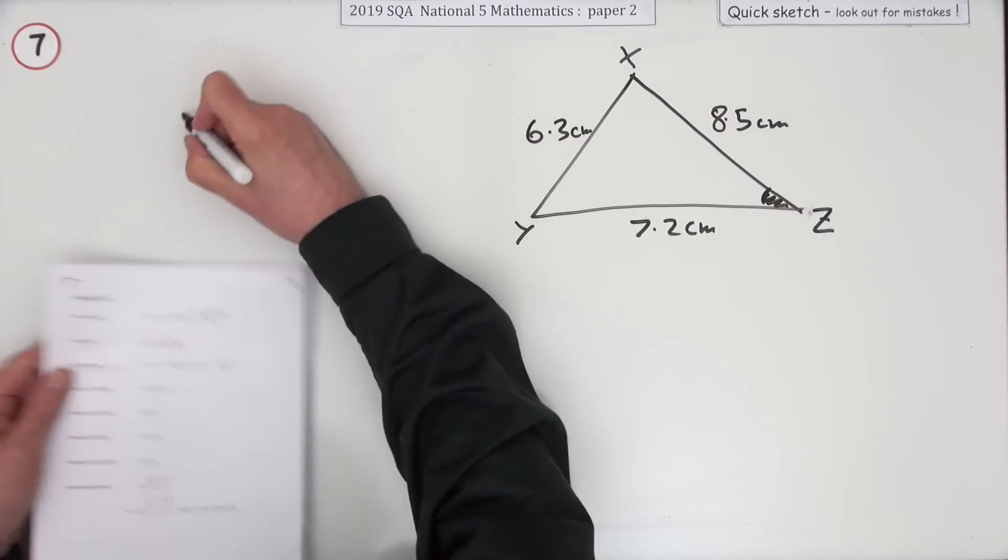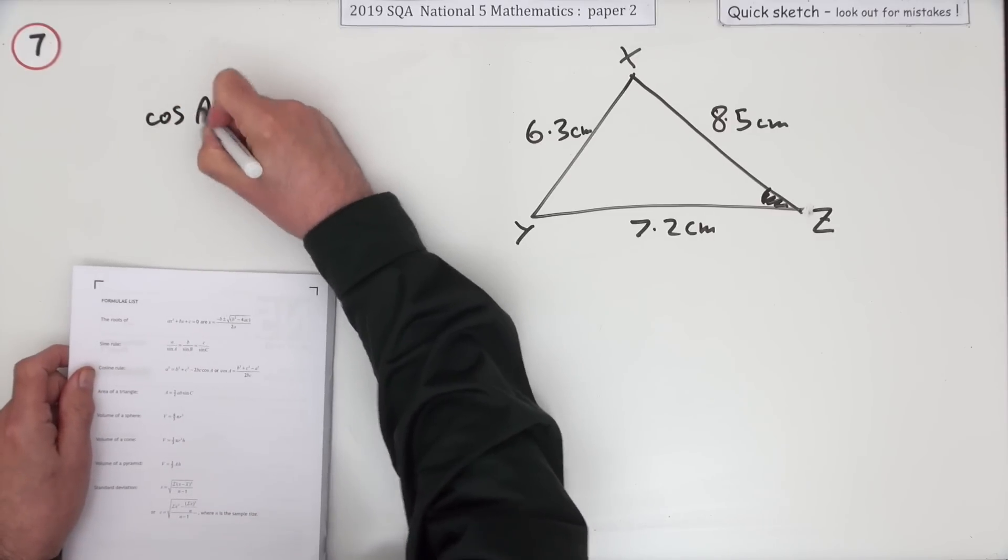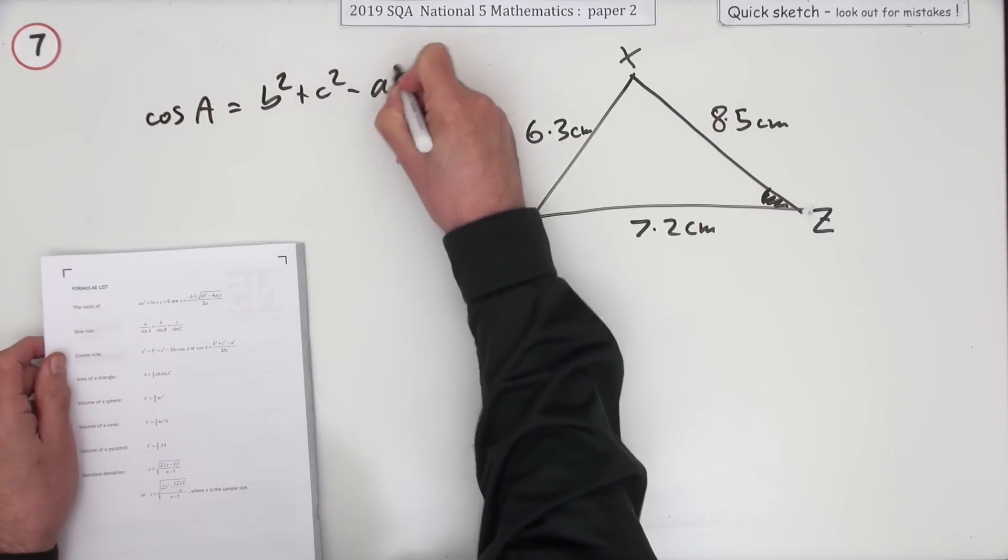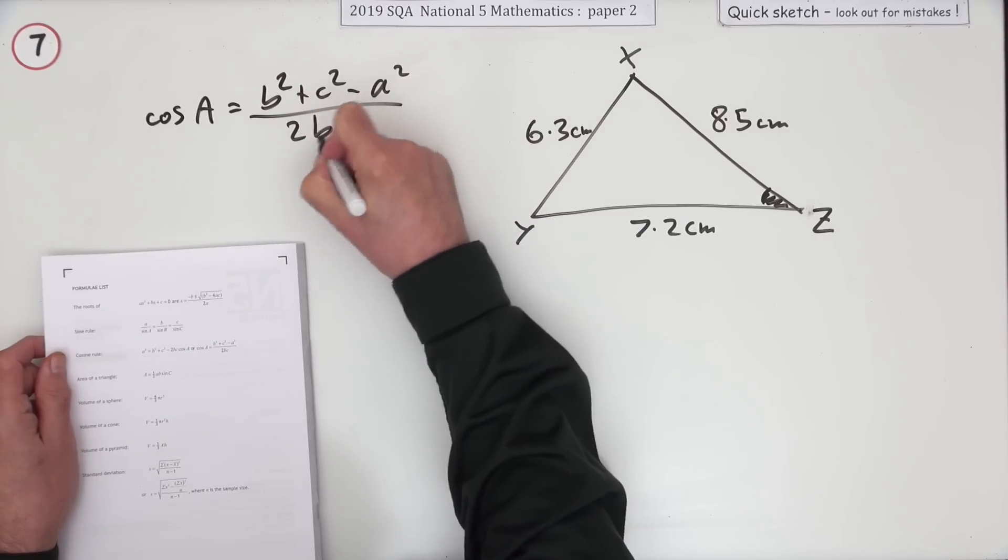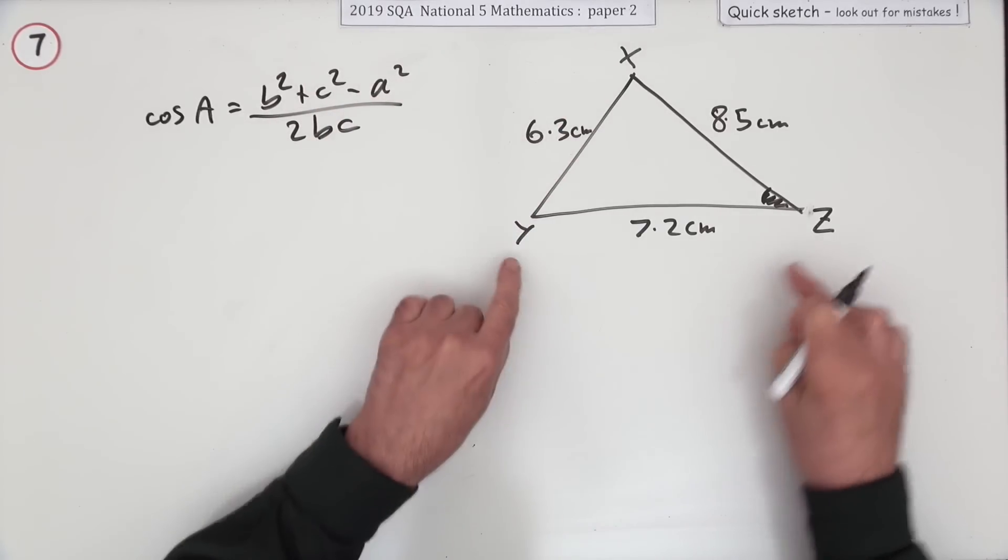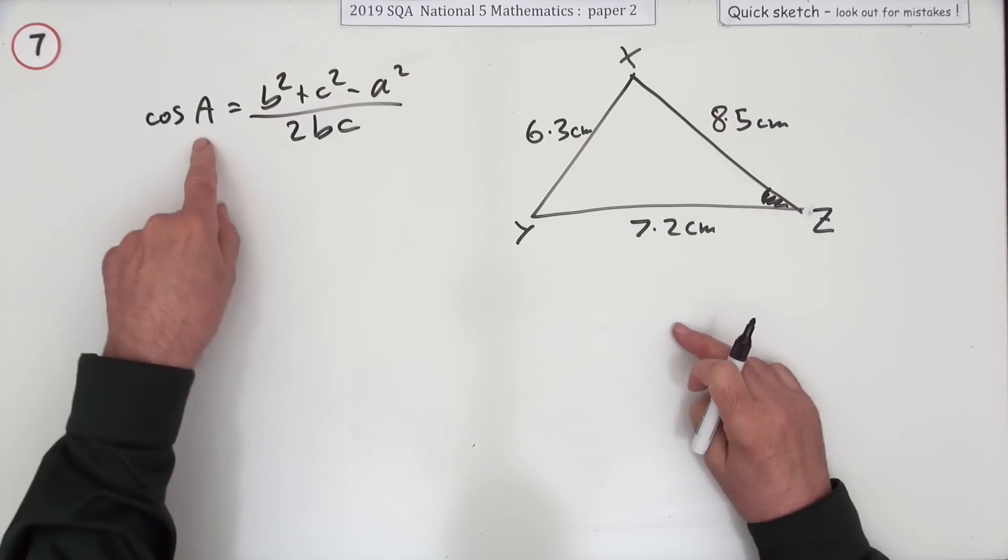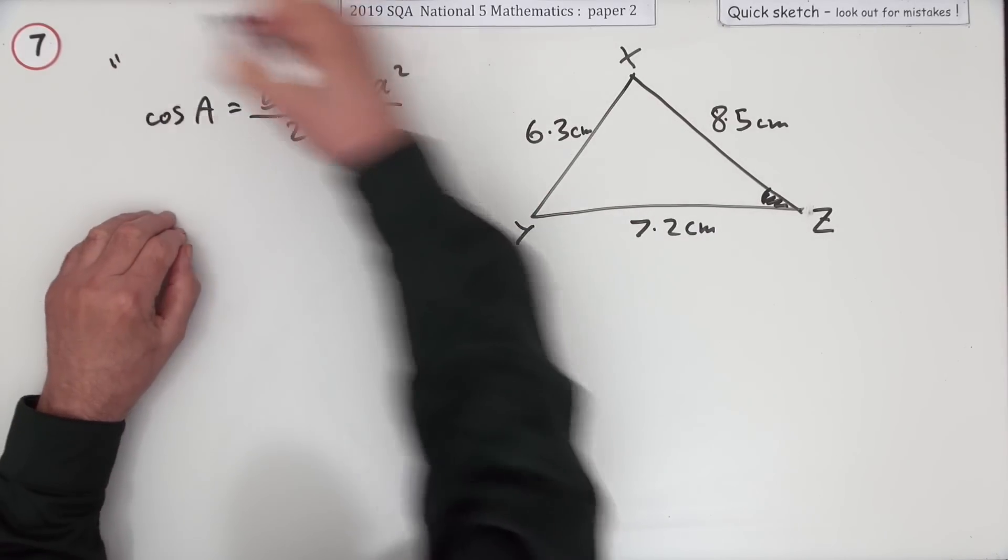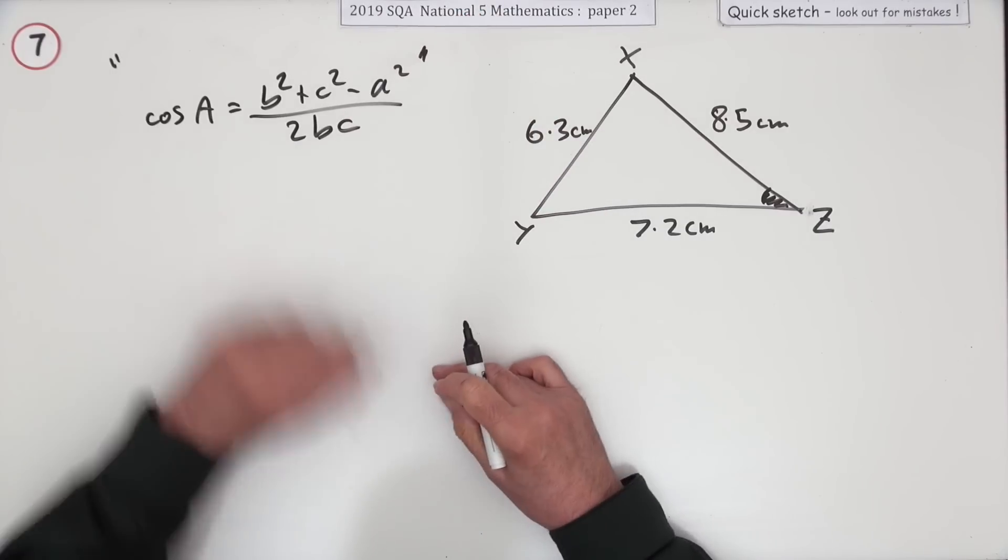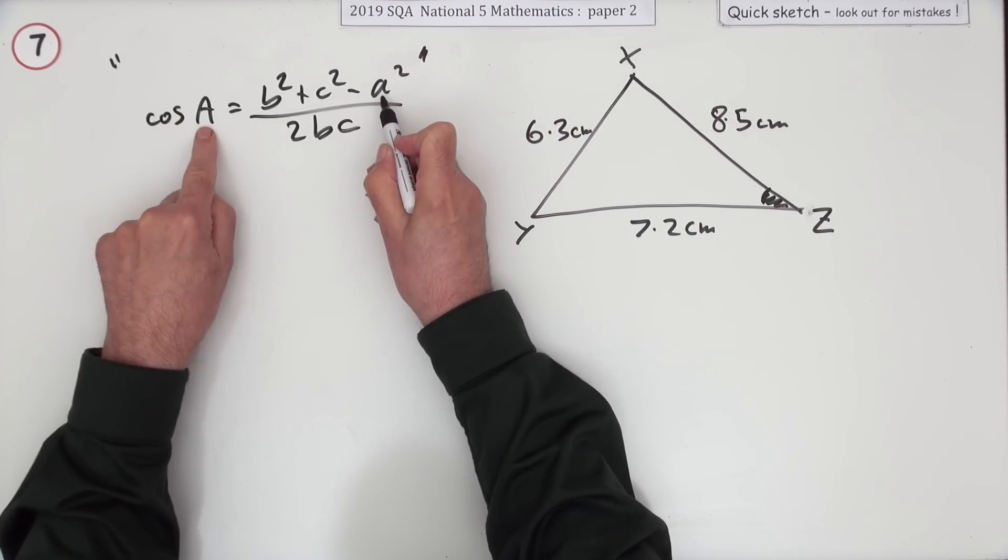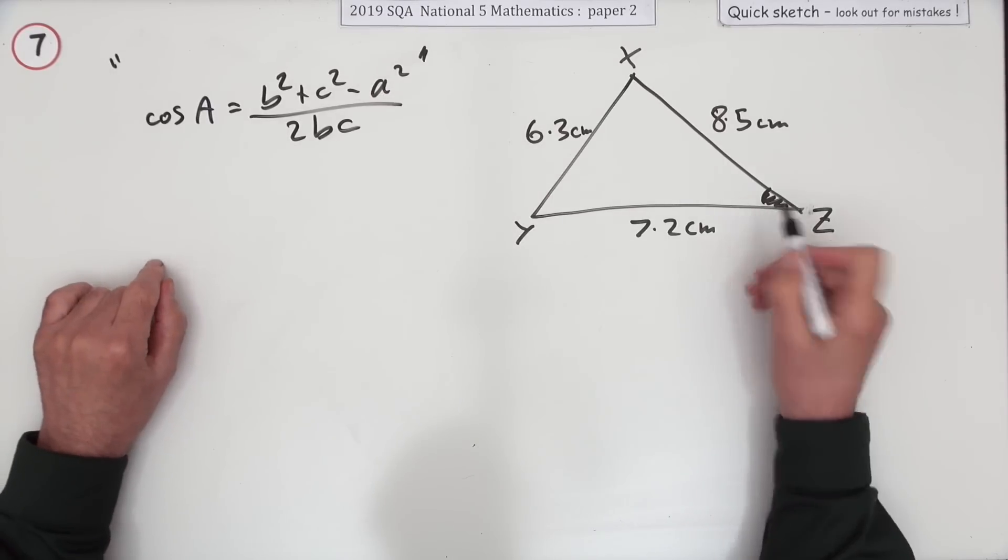You want the one where it's rearranged. This has got cos a equals b squared plus c squared minus a squared over 2bc. There's no a's and b's and c's, but it's just a pattern. You can see the odd one out here. Whichever angle you're looking for, that's the odd side.